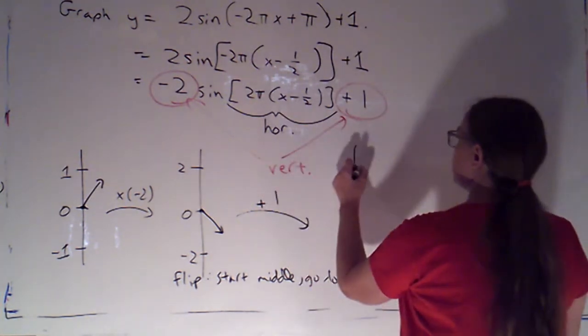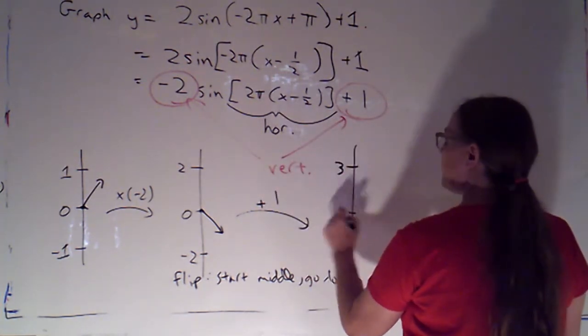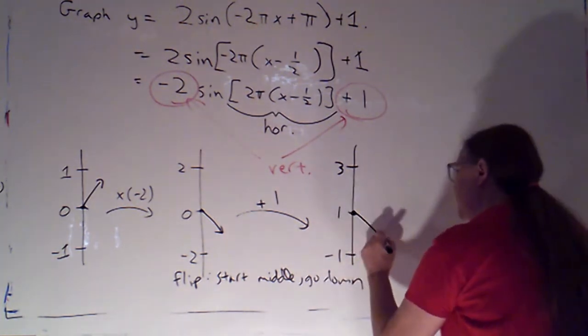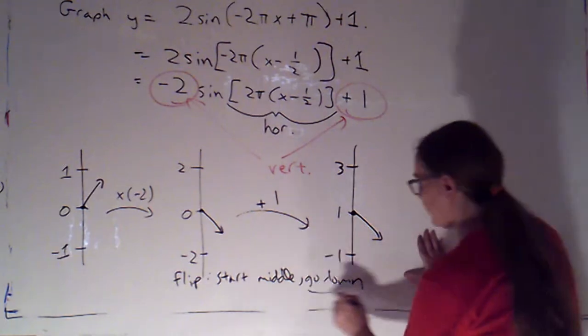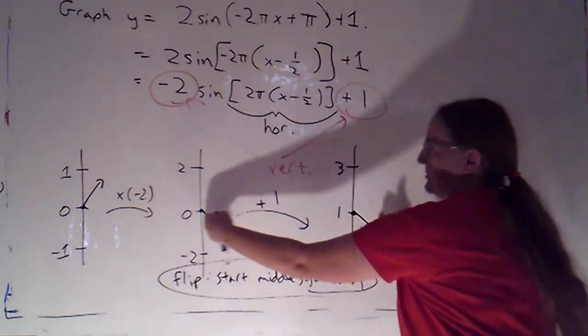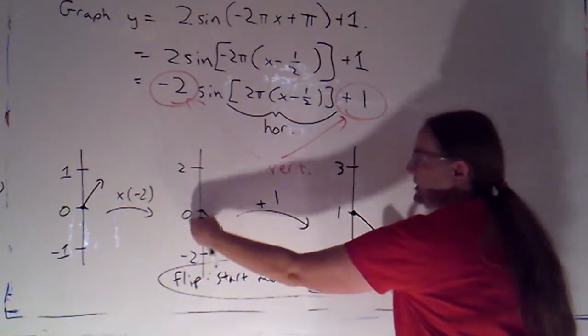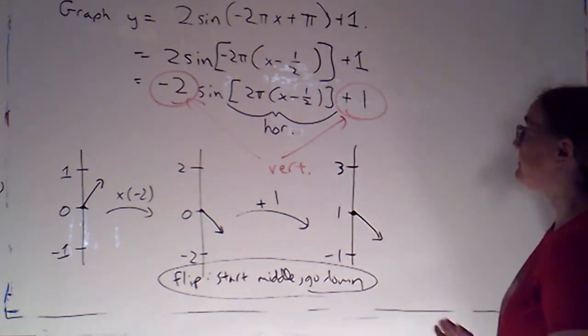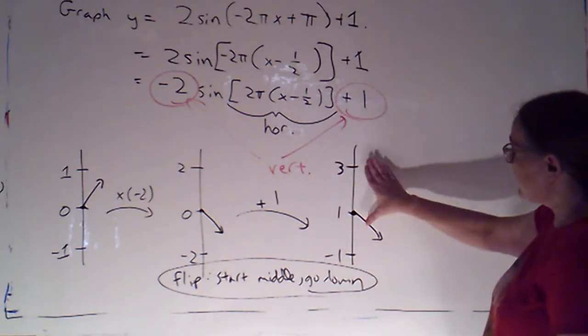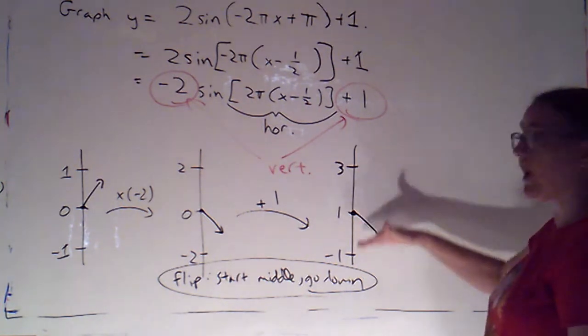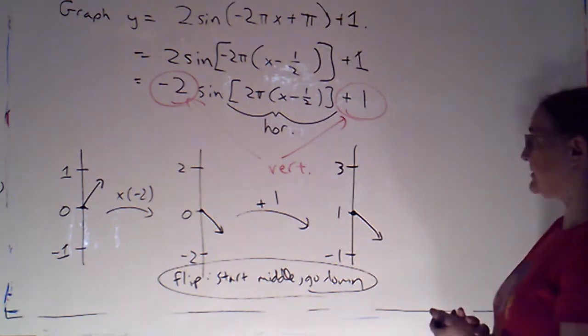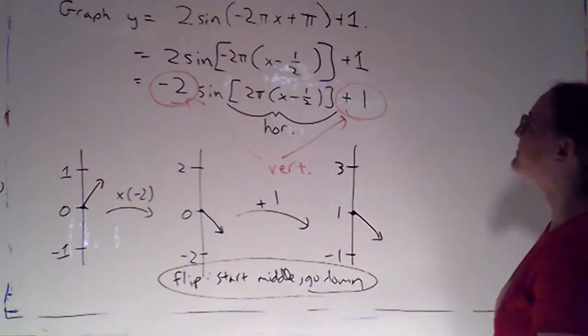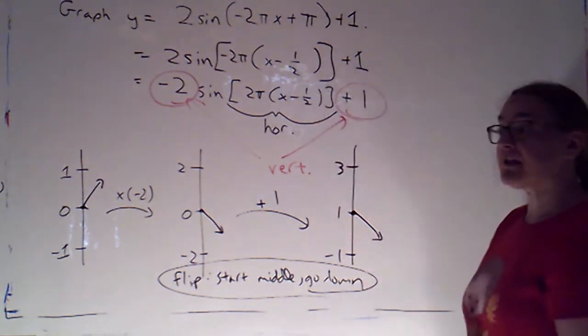Then we're going to add 1. So 2 is going to bump up to 3. 0 is going to bump up to 1. Negative 2 is going to bump up to negative 1. But we're still starting in the middle and going down. So this flip applies because we've done the flip. Here we've done just the flip. Here we've done the flip and the vertical shift. So the y values that I'm going to care about are 3, 1, and negative 1. And I know my pattern is the pattern for a flipped sine graph.